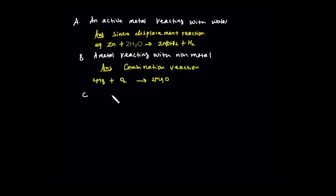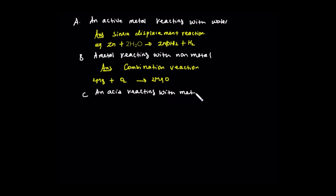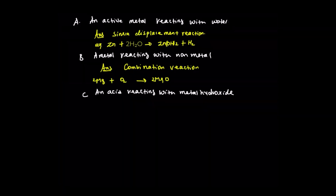C: An acid reacting with metal hydroxide. Acid is a compound, metal hydroxide is a compound. Compound reacting with compound — this is a double displacement reaction. For example, sulfuric acid reacts with sodium hydroxide. This is also called a neutralization reaction.